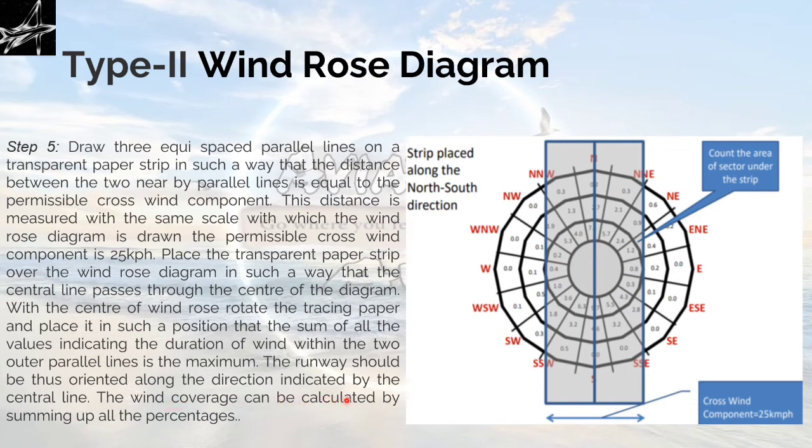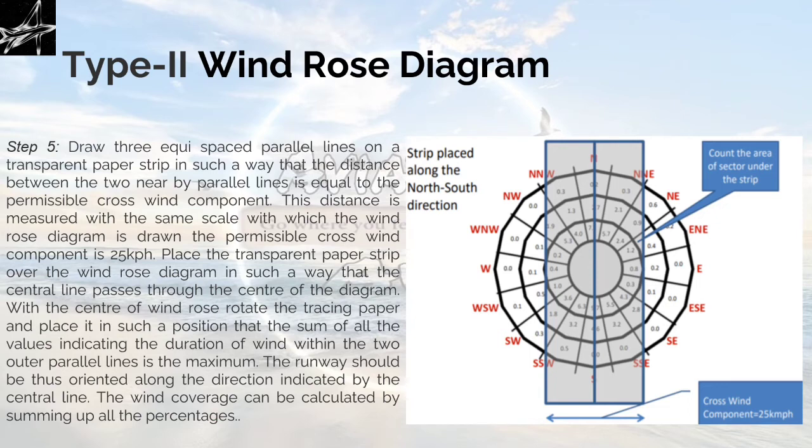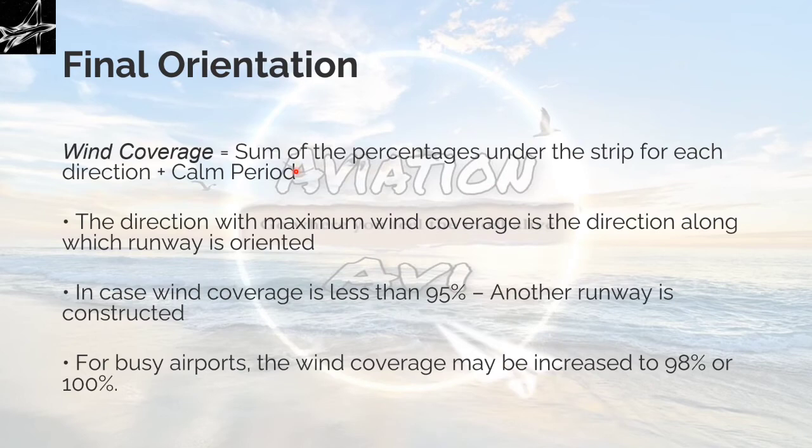The wind coverage can be calculated by summing all the percentages. If you are getting the maximum value in this manner, you will place the center line in this manner. Final orientation: Wind coverage equals the sum of the percentages under the strip for each direction plus the calm wind. Meaning, whatever you are getting after the summation, you have to add calm period into that. The direction with maximum wind coverage is the direction along which the runway is oriented.